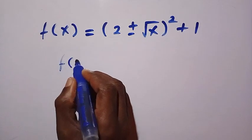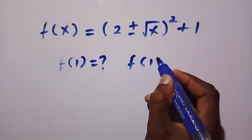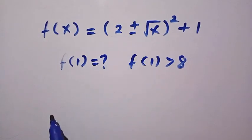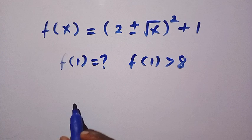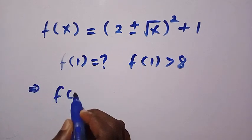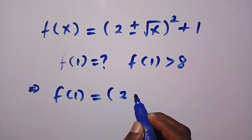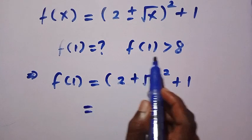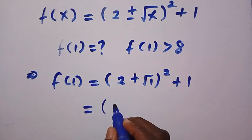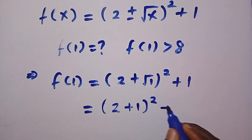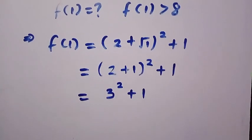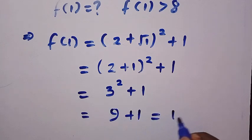The question asks: what is f of 1, given f of 1 is greater than 8? Since we have plus or minus, we consider both cases. For the positive case: f of 1 equals (2 plus the square root of 1) squared plus 1. That gives (2 plus 1) squared plus 1, which is 3 squared plus 1, equals 9 plus 1 equals 10.